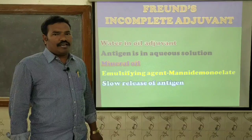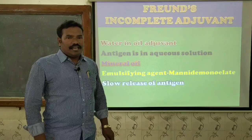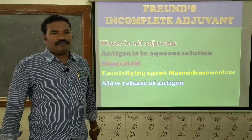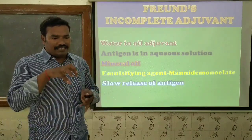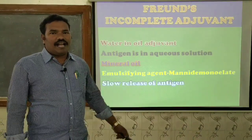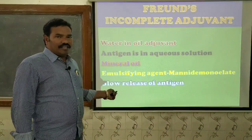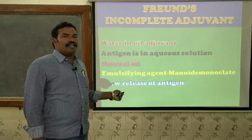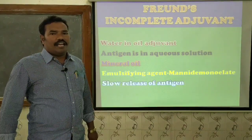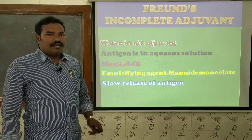Mannide monooleate acts as the emulsifying agent — it disperses the entire antigen into small droplets surrounded by oil. The antigen is in the middle, surrounded by the emulsifying agent, which leads to a slow release of the antigen. This slow release means the antigen remains in contact with the immune system for a longer span of time, leading to enhancement of the immune response.